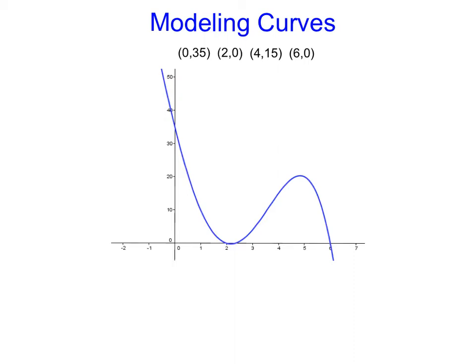So I'm given a list of data points, and here I have the graph for them. It's actually giving me the points over here: 0, 35, 2, 0, and you can kind of see that this one looks like it dips a little bit negative.